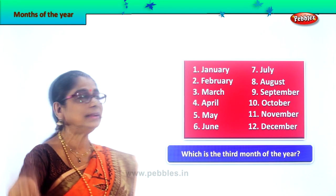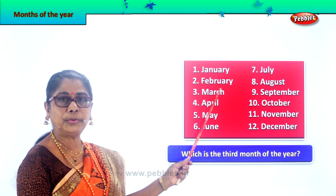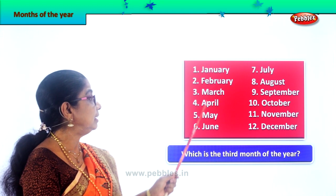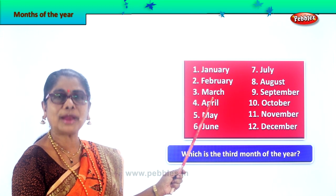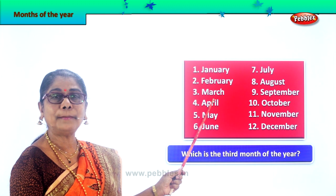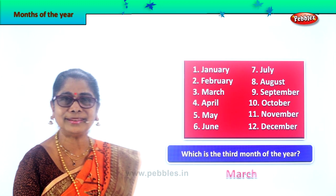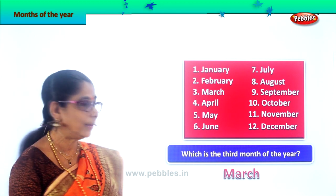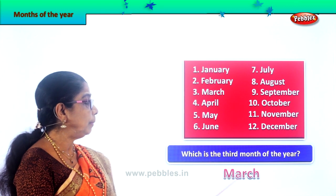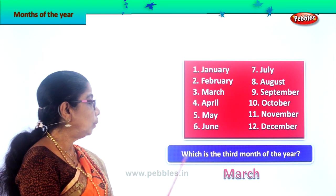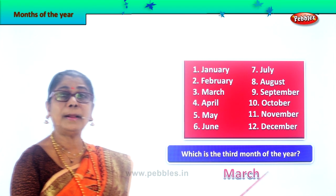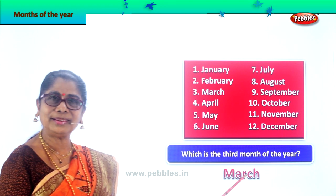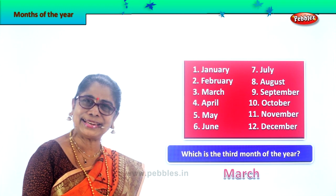Which is the first month? January. Second — February. Third month of the year is March. So your answer is: March is the third month of the year. Looking at the calendar, you will be able to say which is the third month of the year — March is the third month of the year.